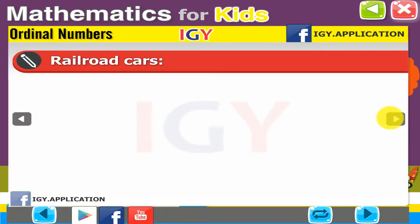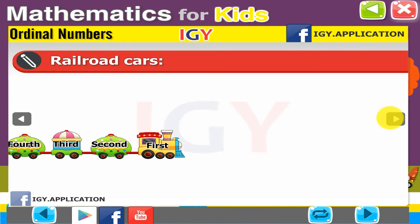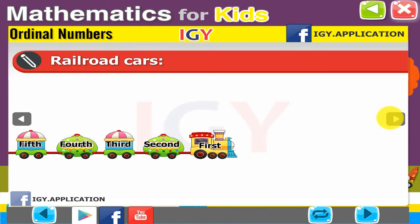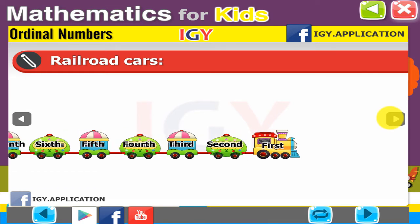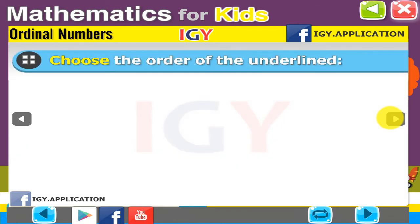Railroad car — who comes first? 1st, 2nd, 3rd, 4th, 5th, 6th, 7th, 8th. Choose the order of the underlined.